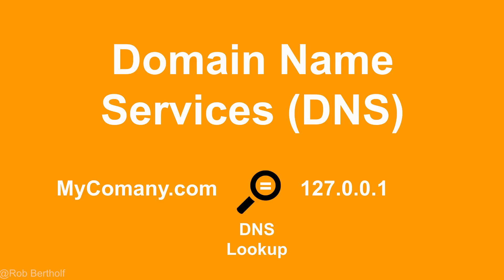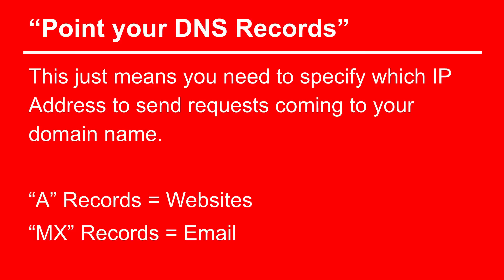There's a database that essentially says, 'if you're looking for mycompany.com, you're actually looking for this IP address.' If you've ever had your webmaster say 'point your DNS records over to this IP address' — it's really pretty straightforward. You own the domain name and need to point what's called the A record for your website to the IP address of the hosting account. If it's your email, that's considered an MX record. So A records for websites and MX records for email — there are many other ones available, but those are the two most common.